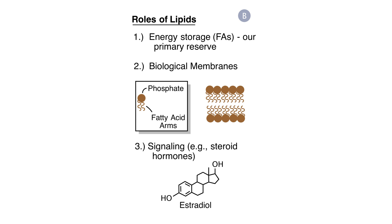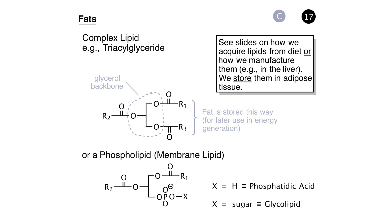Fatty acids are the classic lipid. They're hydrocarbon chains that are fully saturated or contain a small number of double bonds and sometimes branches. Sometimes the fatty acid moiety is esterified to the backbone of glycerol. If you have three fatty acids on a glycerol backbone, one to each of the hydroxyl groups, that's called a triacylglyceride — our primary storage form of energy. With phospholipids, one of the hydroxyl groups of the glycerol backbone is esterified to either phosphate or some kind of decorated phosphate, and phospholipids are the key building blocks of biological membrane.